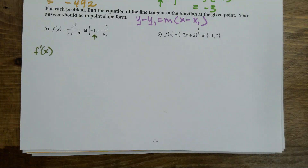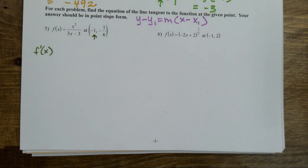Let's go through our process — f prime of x. I have so many choices: I can do the power rule, product rule, quotient rule, or chain rule. Which one do I do here? Quotient — because it's a division problem, there's a numerator and a denominator, so quotient rule.